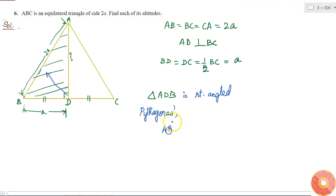AB square is equal to sum of the squares of other two sides, DB square plus AD square. I know AB is equal to 2A, so I will put 2A square is equal to... I know DB is equal to A, so A square plus AD square.